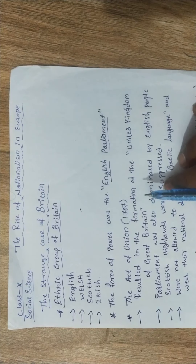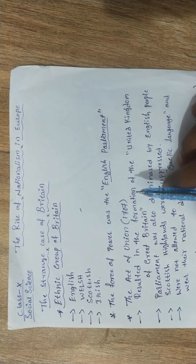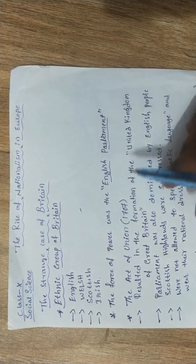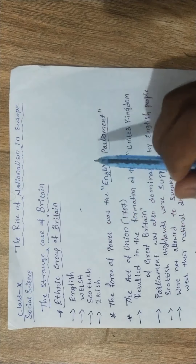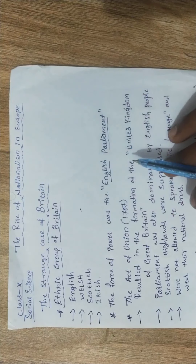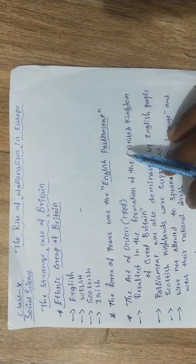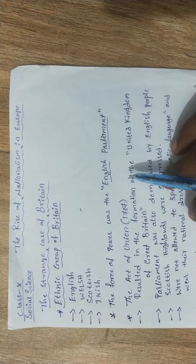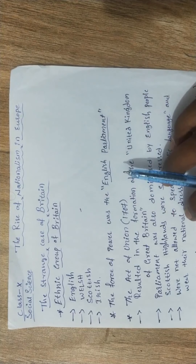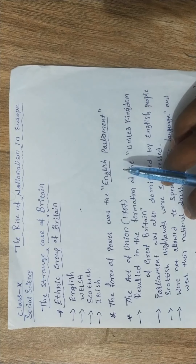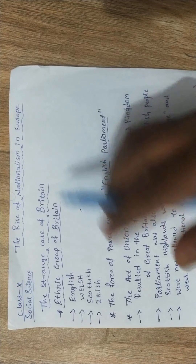In the previous class you studied about unified Italy and unified Germany. If you compare those with Britain, Britain stands separately because it had a slightly different kind of unification. In Germany and Italy, people divided by language were gathered together to form unification.